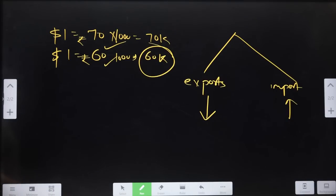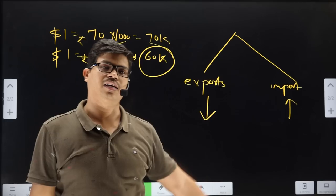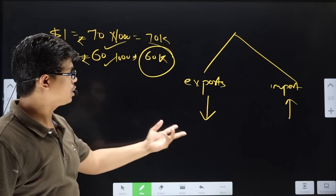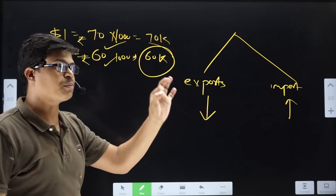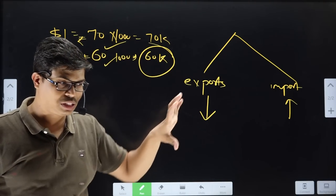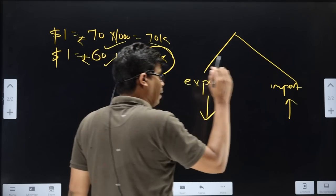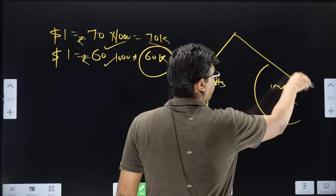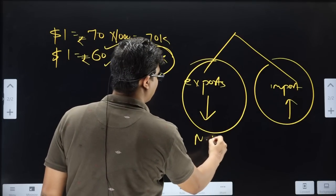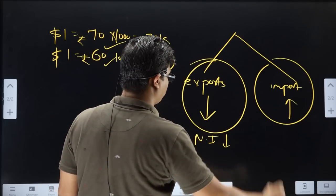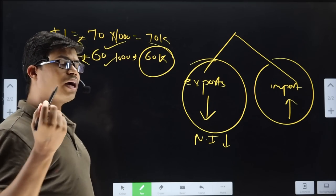Some students ask if they should just remember depreciation and reverse it for appreciation — yes, you can, but now you understand the reason and can explain it properly in a paper. In appreciation, export falls and import rises, meaning national income is reduced. In depreciation, national income increases.